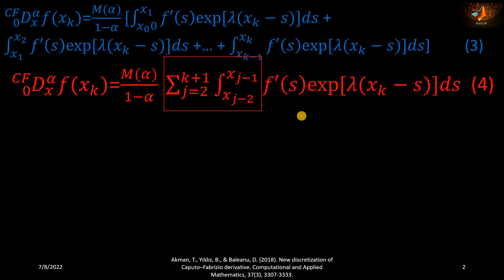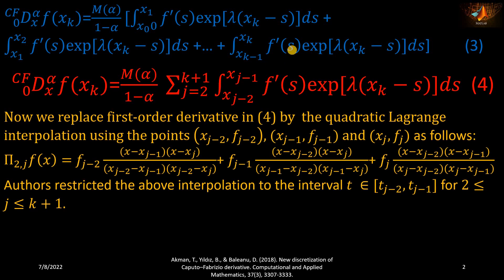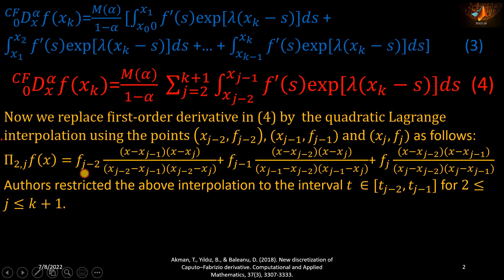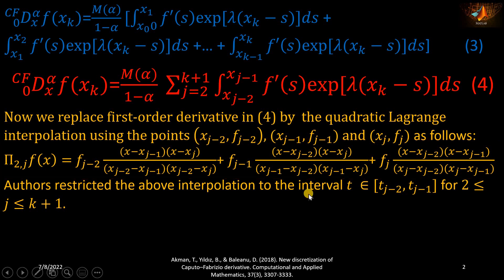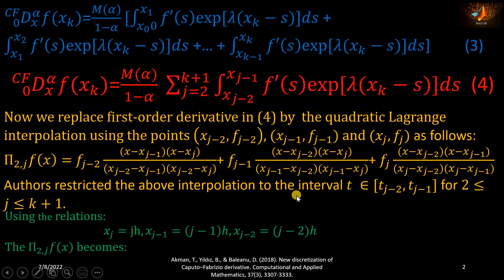We write down the compact form using summation notation where j starts from two and ends at k plus one — this is equation number four. In equation number four, we have a first-order derivative inside the integral. We will use the quadratic Lagrange interpolation polynomial that passes through three points visible on the screen, and replace the first-order derivative with this polynomial.